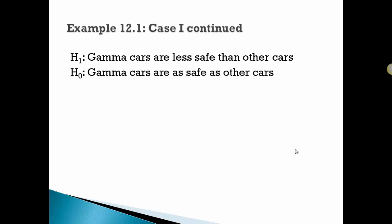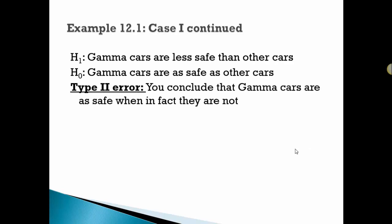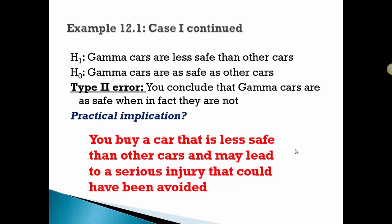Let's say with the same example, now let's say that you make a Type II error. You conclude the cars are as safe when, in fact, they're not. What's the practical implication here? You buy a car that's less safe and may lead to a serious injury that could have been avoided.